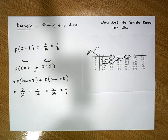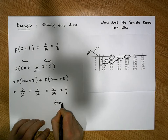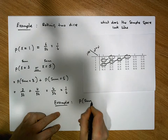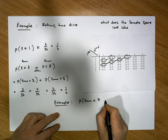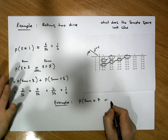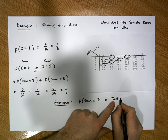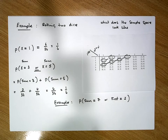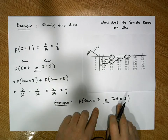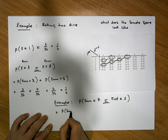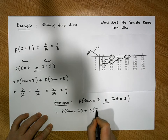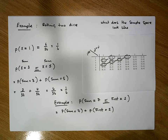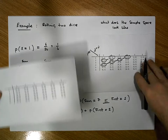Let's do another, slightly more complicated example. What's the probability that the sum of the two dice equals seven, or the first die gives a value equal to two? Using the addition rule with 'or', at minimum this equals the probability that the sum is seven plus the probability that the first die has a face value equal to two. Let me get a clean sample space to work from.